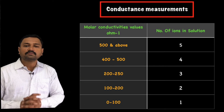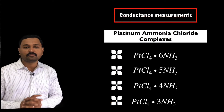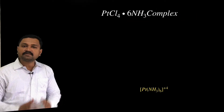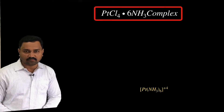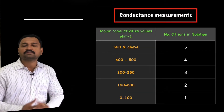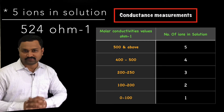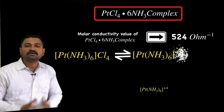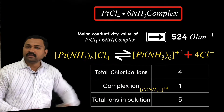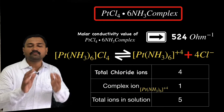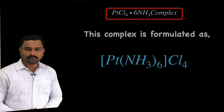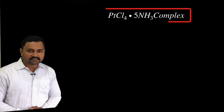Werner found different molar conductivity values for platinum ammonium chloride complexes. For the first complex PtCl₄·6NH₃, the molar conductivity is found to be 524 Ω⁻¹, indicating the presence of five ions in solution. The ionization shows four chloride ions and one complex ion, giving a total of five ions. Hence this complex is formulated as [Pt(NH₃)₆]Cl₄.